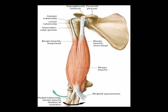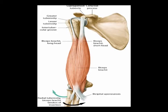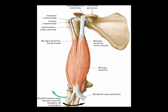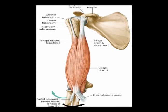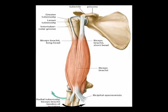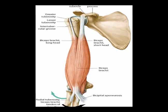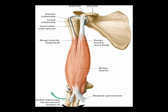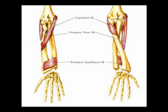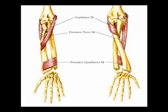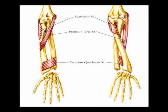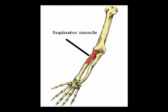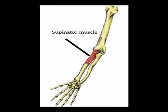The concentric action of the supinator muscle is forearm supination. It works along with the biceps brachii muscle to supinate the forearm, and the opposing muscle is the pronator teres. So the supinator muscle — again, the concentric action — is forearm supination.